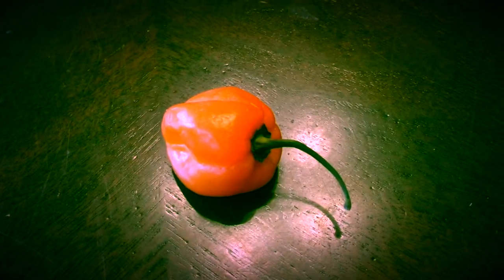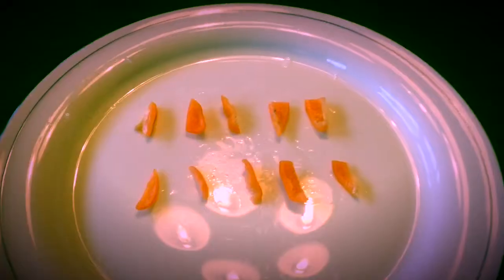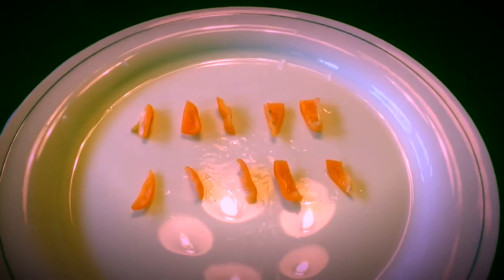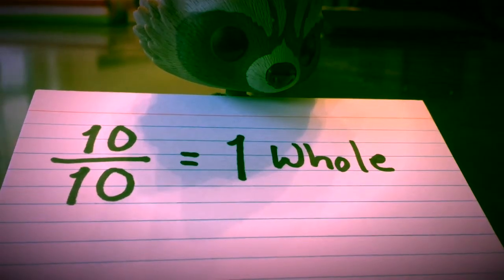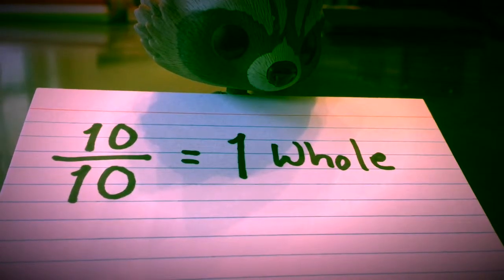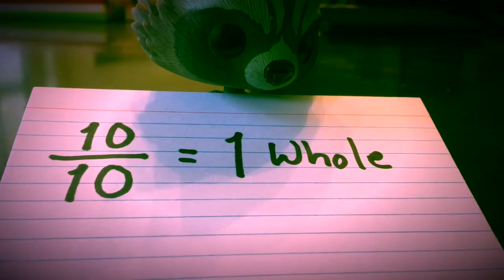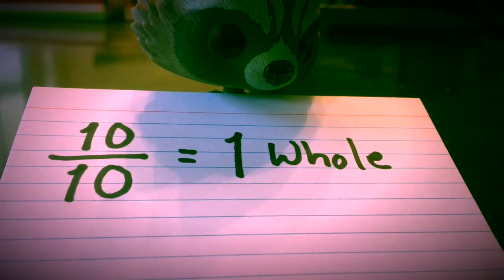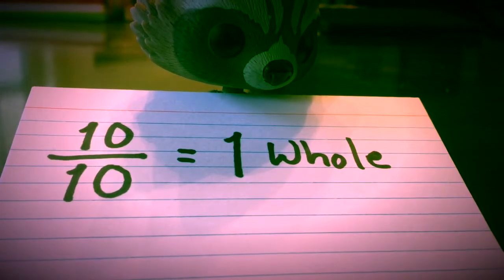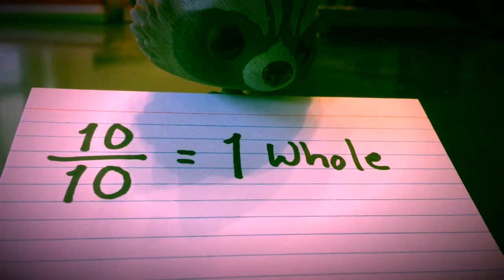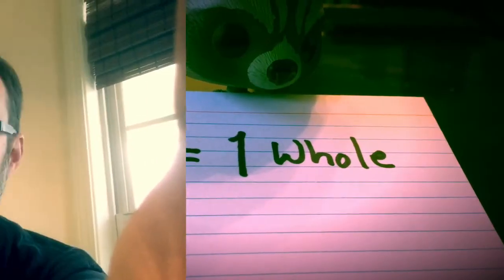Using this habanero as a whole, I will cut it up into 10 pieces, so now 10 pieces make it my whole. The fraction representing the whole habanero looks like this: 10 over 10 equals one whole, or 10 tenths equals one whole.